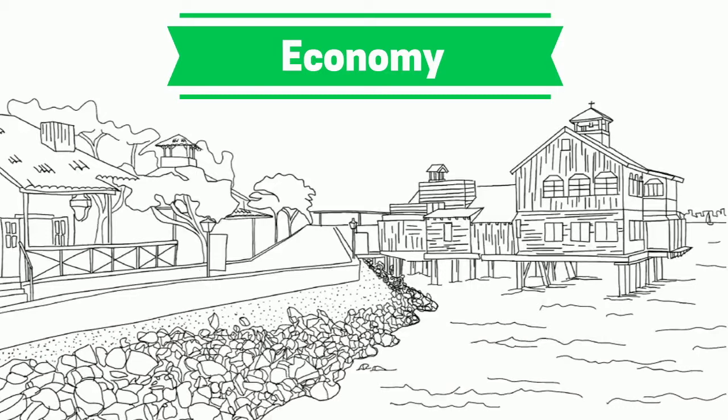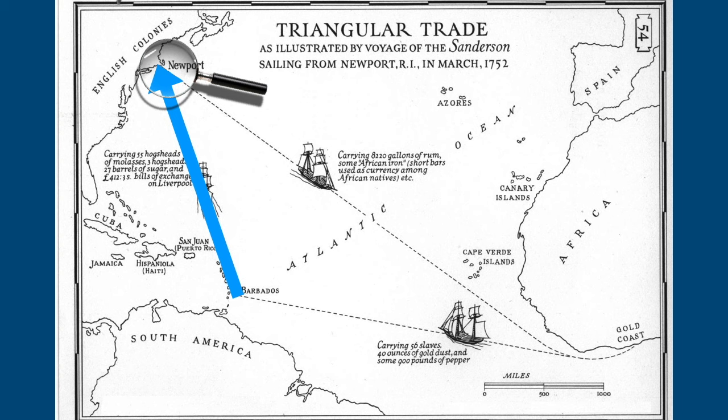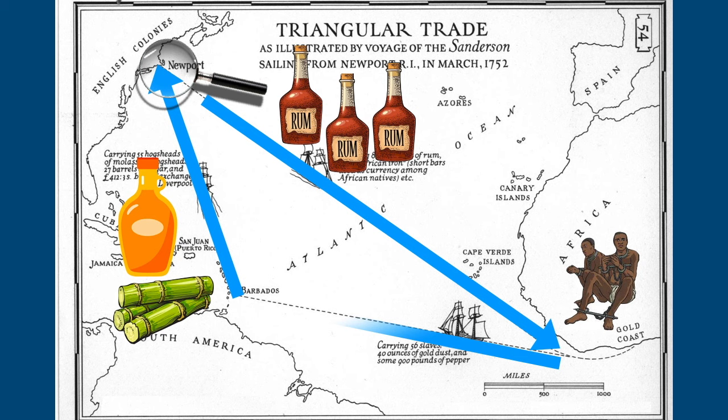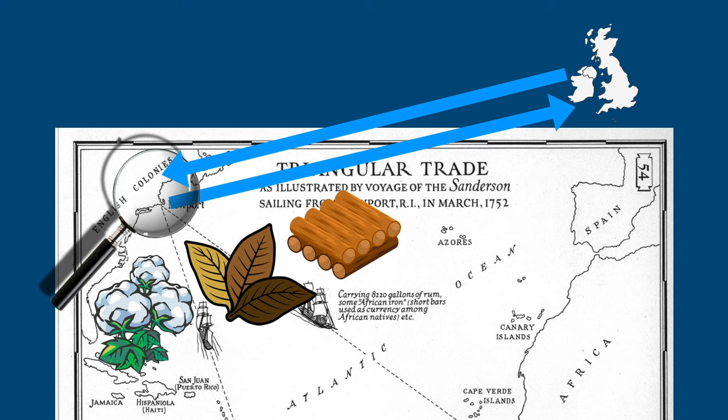Seaports kept New England at the heart of the triangular trade. New England was part of an international trade across the Atlantic Ocean. Items like molasses and sugarcane were shipped to New England, where they were processed into rum. Lots of other raw materials were shipped across the Atlantic to trade for slaves in West Africa. The triangle would be completed by sending slaves back to the Caribbean, with their ultimate destination being the British colonies. New England also sent its raw materials like timber to the UK, and in return the UK would send finished products, goods, paint, and tea leaves.